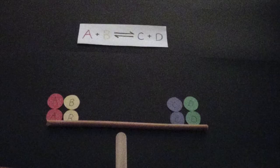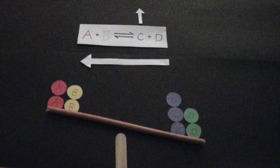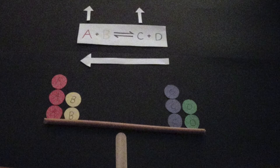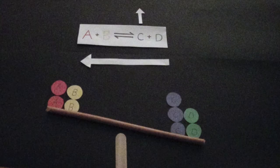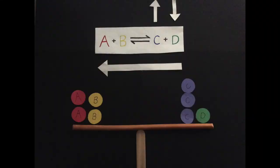If you increase the concentration of product C, then the reaction will shift to the left in order to re-establish equilibrium. This can be achieved by increasing the concentration of reactant A or B, or decreasing the concentration of product D.